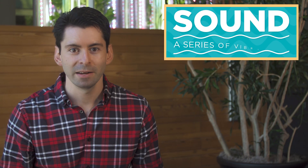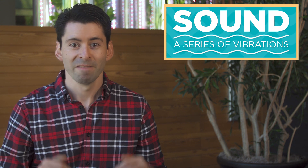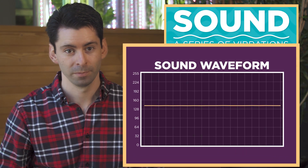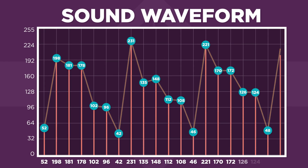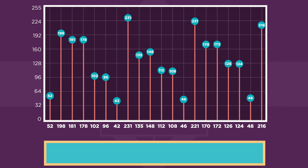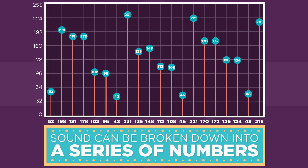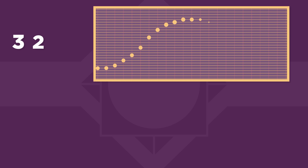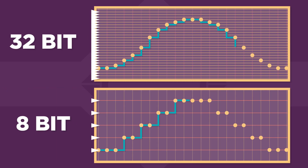Every sound is basically a series of vibrations in the air. Vibrations can be represented graphically as a waveform. Any point on this waveform can be represented by a number. And this way, any sound can be broken down into a series of numbers. If you want higher quality sound, you would pick 32-bit audio over 8-bit audio. More bits means a higher range of numbers.